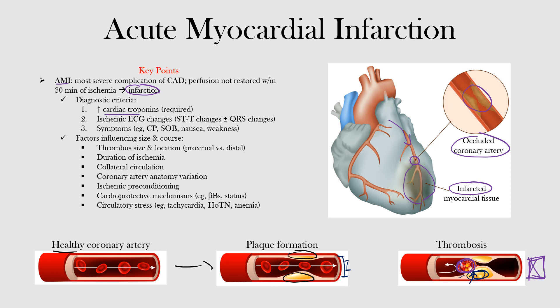The diagnostic criteria require elevated cardiac troponins plus at least one of: ischemic EKG changes (ST and QRS changes to be covered in upcoming lectures) or symptoms such as chest pain, shortness of breath, nausea, vomiting, and weakness. Influencing factors include thrombus size, proximal versus distal location, duration of ischemia, collateral circulation, coronary artery anatomy, ischemic preconditioning, medications such as beta blockers and statins, and circulatory stressors such as tachycardia, hypotension, and anemia.